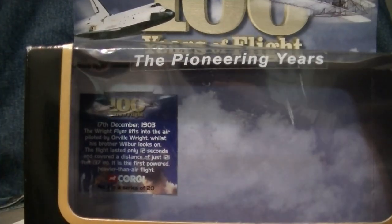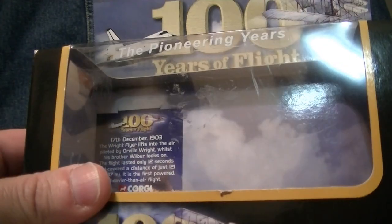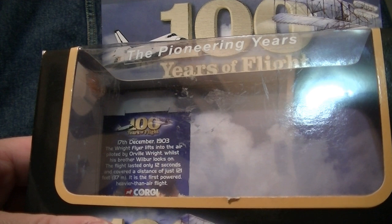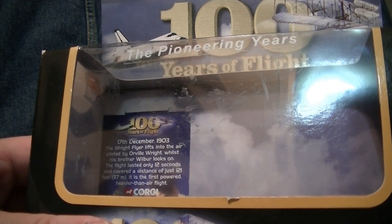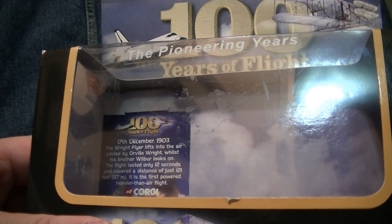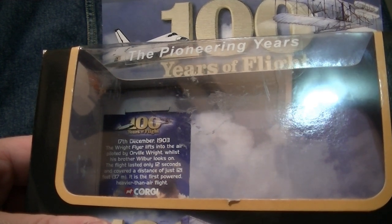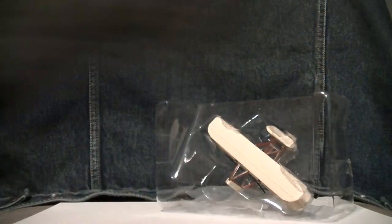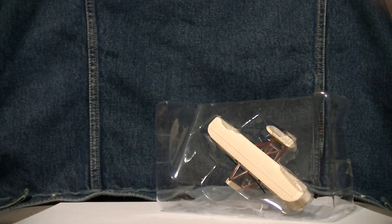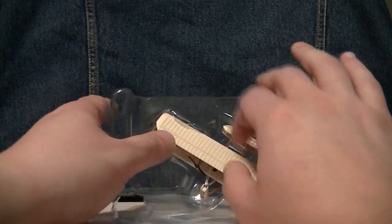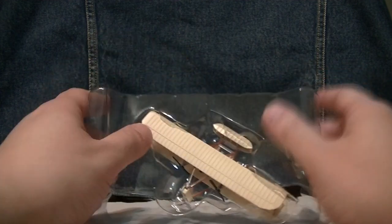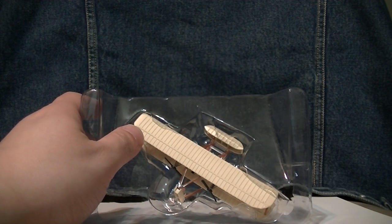And of course, we're going to look at one more blurb. December 17th, 1903, the Wright Flyer lifts into the air piloted by Orville Wright. While his brother Wilbur looks on, the flight lasted only 12 seconds and covered a distance of 121 feet. It is the first powered, heavier-than-air flight. And I actually know all about that because I did a report on the Wright Brothers when I was in high school, one of those things where you can choose your own project. Oh, this is going to make a lot of noise, so I'm going to shut off the camera.